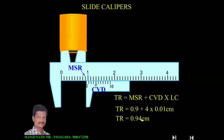This is how we use the upper jaws to measure the internal diameter of a cylinder. Slide calipers can also be used to measure external diameter, thickness, and the depth of a cylinder. So this is about slide calipers. Thank you.